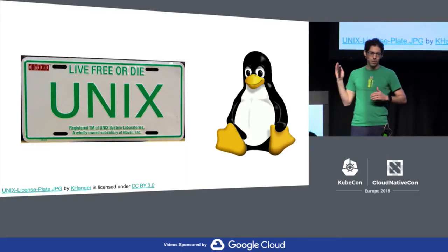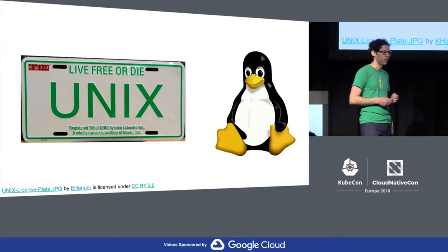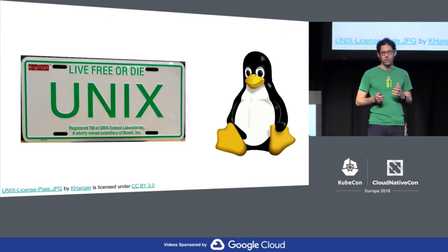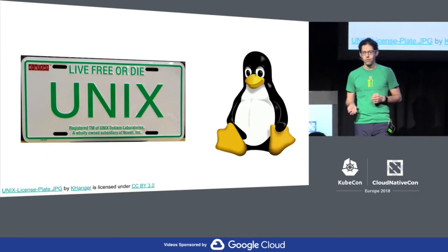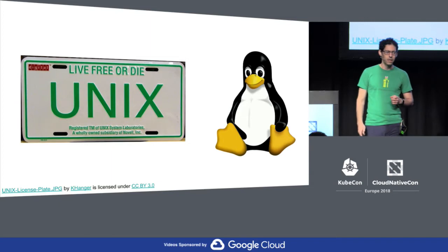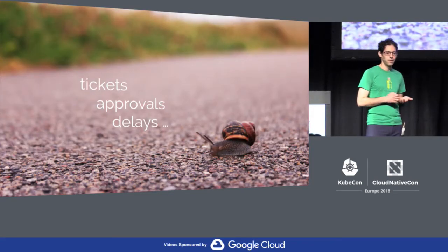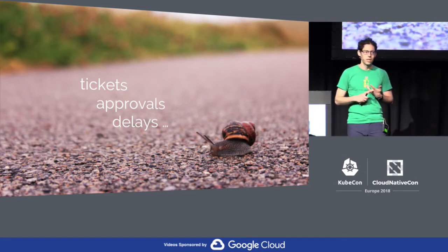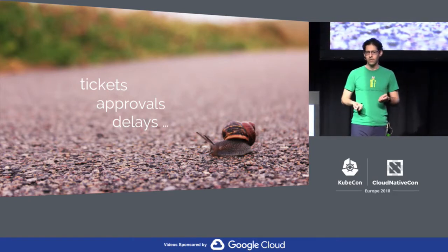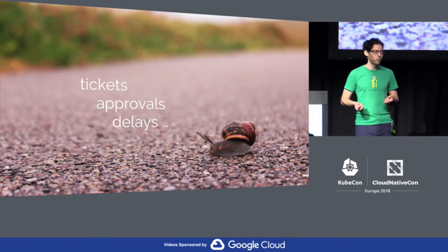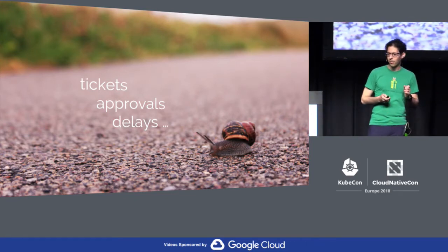Fast forward past mainframes, and we get to things like Unix and Linux and Windows. Now developing apps is easier, deploying apps a little bit easier, but getting access to those computing resources still isn't super easy. You have to file tickets — I need a new server, I need a new virtual machine. With tickets comes delays, you have to get things approved, maybe multiple people have to approve it. So we're better than having to rewire physically, but we're still not there yet.